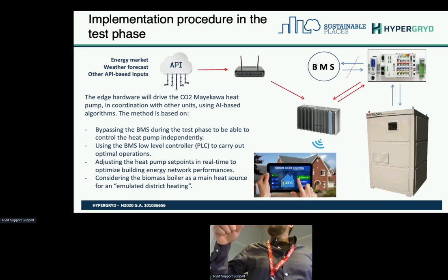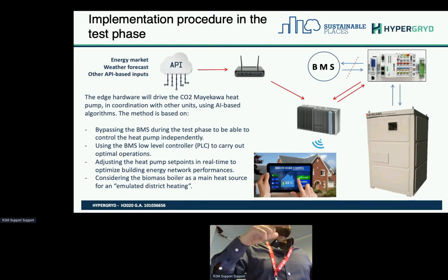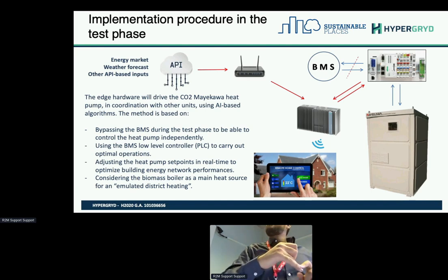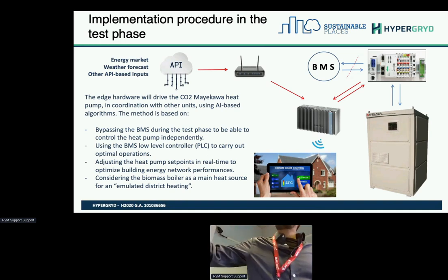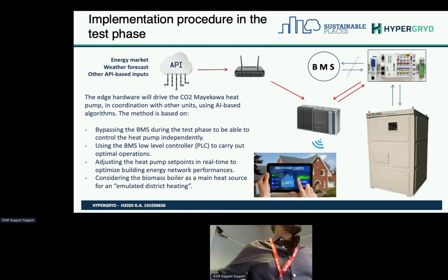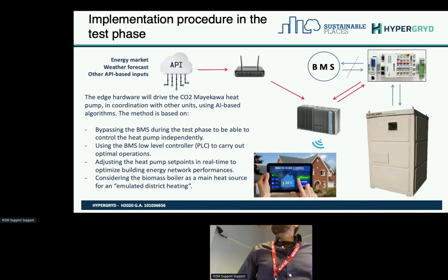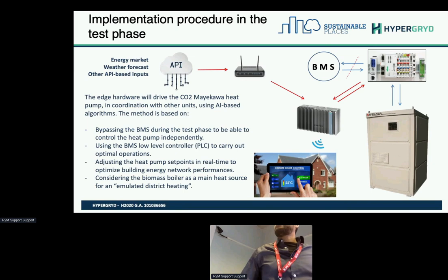Our idea is to overtake the BMS — deactivate it temporarily, fetch the data from the PLC, from the controller — and use the hardware, which is simply an edge controller with big capability of computing and storing data. Then we integrate many online inputs and our optimization algorithm. We start first with unidirectional data: we just visualize data, we don't control yet because it's a bit sensitive. When everything is fine, then we can make it bidirectional. We fetch the data, we store, we optimize, we visualize through smart devices, and then we send back some control actions to the heat pump optimally along with other units. The heat pump operates according to the electricity price, heat energy availability, weather forecast, and information coming through API from a digital screen or similar source. This is the idea behind our approach that we hopefully are going to validate in the next few months with our partner.